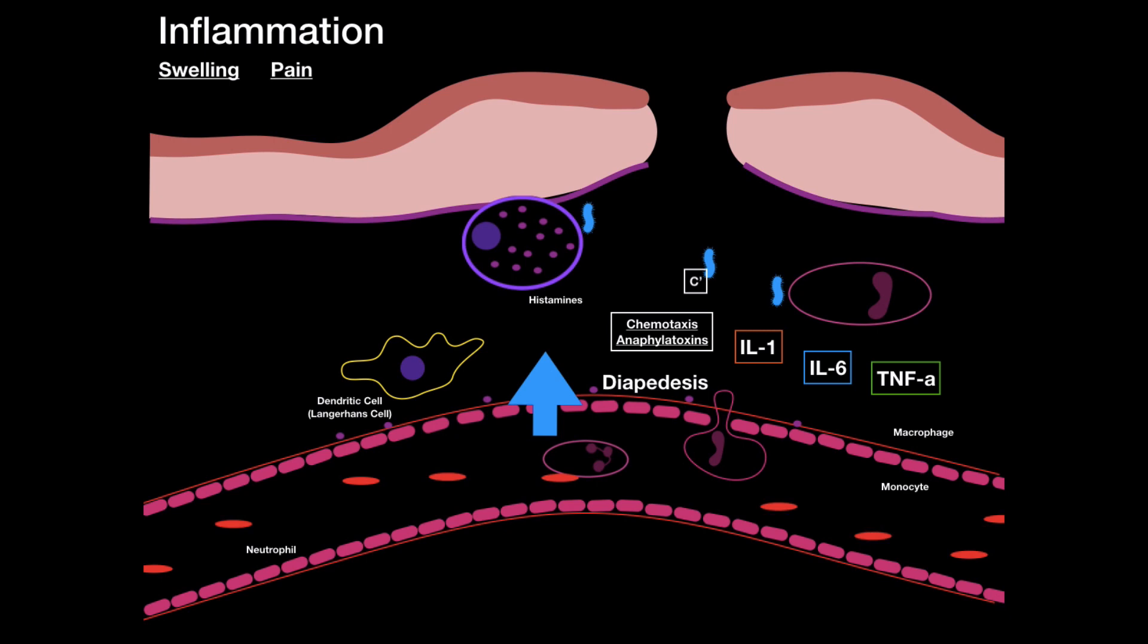Now, as the blood vessel is dilating, more cells, more red blood cells flow in and blood is warm at 37 degrees, right? Our skin is not, and so heat happens, and that causes redness due to color of blood. These four are the main characteristics of inflammation. Swelling, pain, heat and redness.